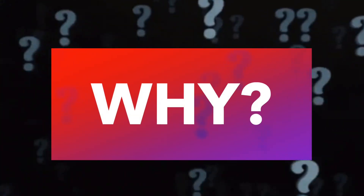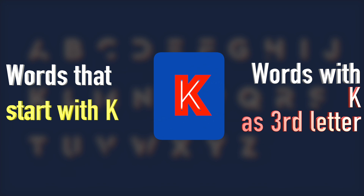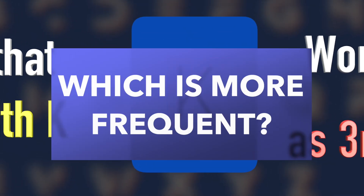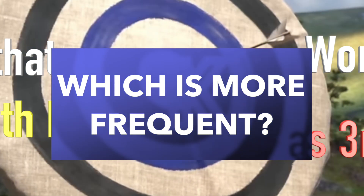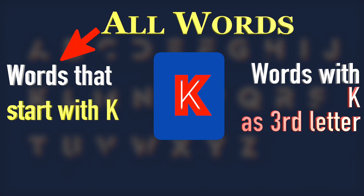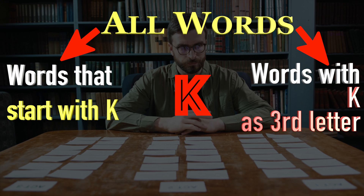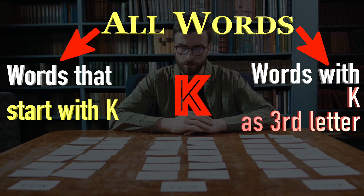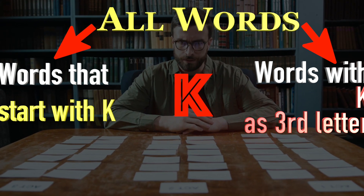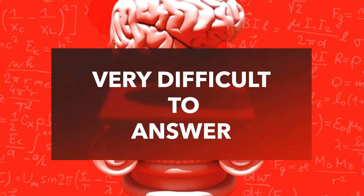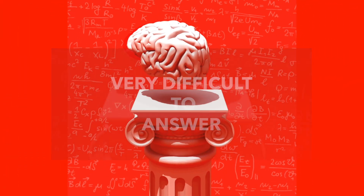So now let's look at why we suffer from availability bias. To understand that, let's go back to the question of K words. To answer this question accurately, you would need data on all the words that have the letter in the start and those that have the letter in third place. But we don't have this information readily available. So basically, it's a very hard question to answer on the spot. But our brains don't want to give up so easily.